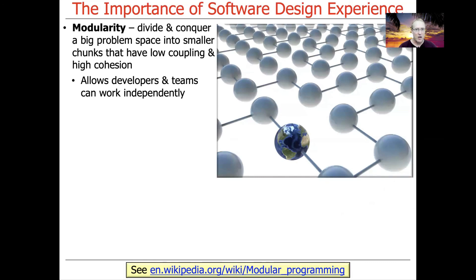Another key theme — especially as software systems get larger and tend to run in distributed environments connected by networks, using microservices or software-defined architectures — is the concept of modularity. This involves taking a large design space or problem domain and breaking it up into smaller pieces that have low coupling but high cohesion. Modularity is all the rage with microservice-style architectures, enabling systems to be built out of modular pieces that can be reused and reassembled in flexible ways, boosting productivity and providing more economic value. It also allows developers and teams to work independently and in parallel on modern multi-core systems running in cluster-style environments.